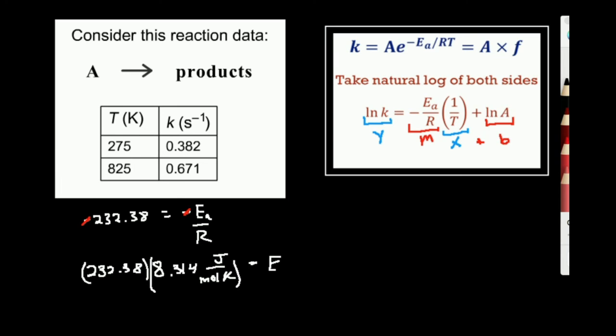Then that means I'm going to get an activation energy equal to this magnitude. Let me run this into the calculator. 232.38 times 8.314. And this is going to be equal to 1,932 joules per mole.